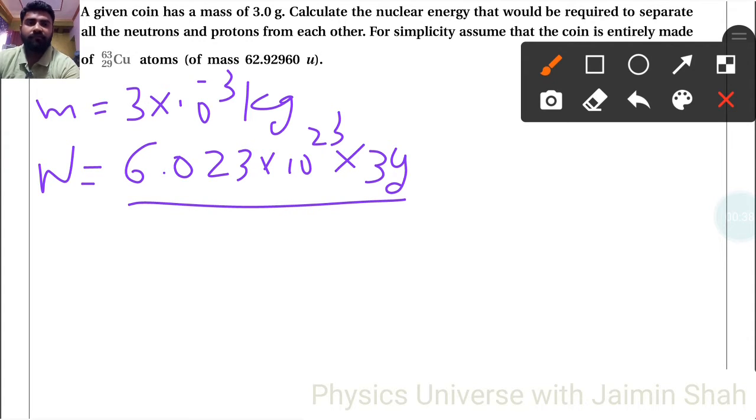So here 63 grams, so N equals 2.868×10^22 will be there, right? So 10^22, these are the number of atoms we have there, right.